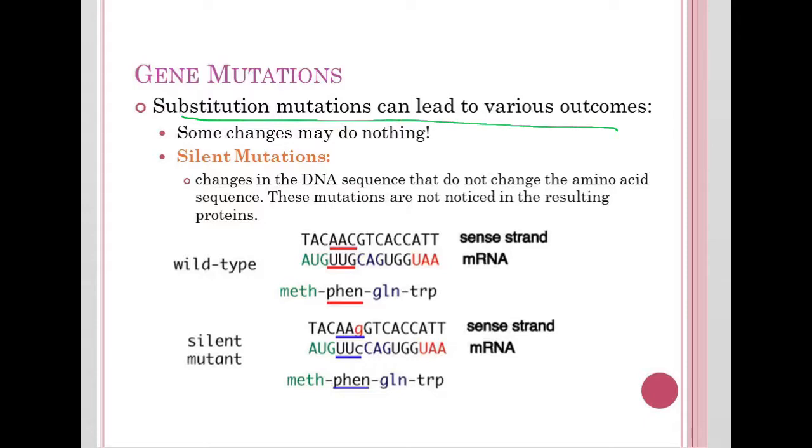Some changes in a substitution mutation might literally do nothing. These are called silent mutations, and going along with what that means, you will not see them at all. Those changes to the DNA sequence do happen, but they ultimately do not change the amino acid sequence, so they're not noticed in the resulting protein.